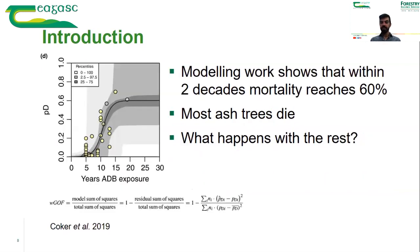When the disease arrives to an ash forest or plantation, how do trees die? A very recent publication looked at different studies tracking tree mortality over the years after the disease is identified. Putting together all those data, a graph shows that in the first two decades, mortality will reach around 60 percent.